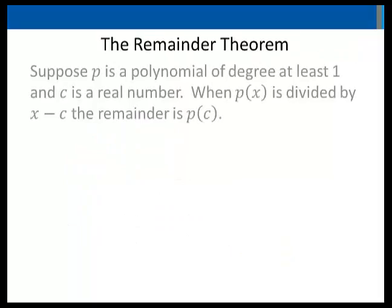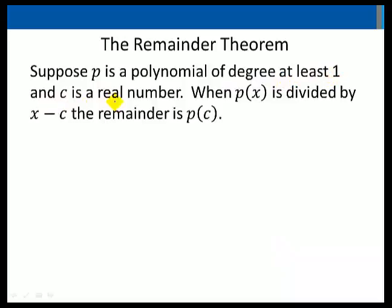The remainder theorem. Suppose P is a polynomial of degree at least 1 and C is a real number. When P of x is divided by x minus C the remainder is P of C.